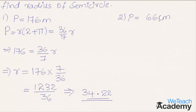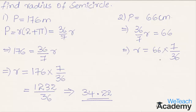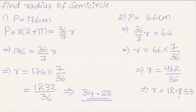Coming to the next one where perimeter is equal to 66 centimeters — substituting the given value of perimeter in the formula, we get 36/7 into r = 66. Transferring 36/7 to the right-hand side, we get r = 66 into the reciprocal of 36/7, that is 7/36. Multiplying 66 into 7 gives 462 divided by 36, and dividing gives radius equal to approximately 12.833 centimeters.